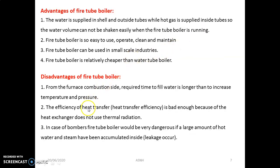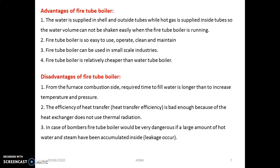These are the advantages and disadvantages of the fire tube boiler. The water is supplied in the shell and outside the tubes, while hot gases are supplied inside the tubes, so the water volume cannot be shaken easily when the boiler is running. The fire tube boiler is easy to use, operate, clean, and maintain. As far as disadvantages are concerned, the efficiency of heat transfer is poor because heat exchange is very poor and there is limited thermal radiation. Also, there is a furnace combustion limitation.